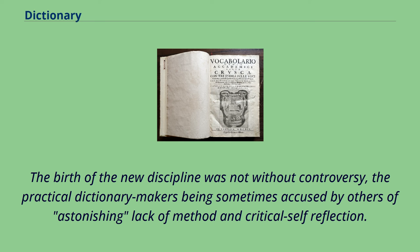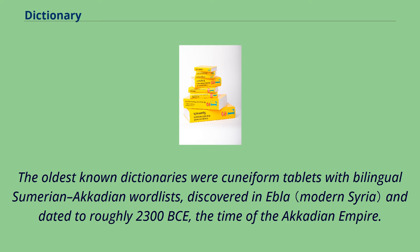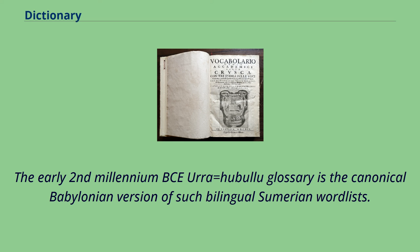The birth of the new discipline was not without controversy, the practical dictionary-makers being sometimes accused by others of astonishing lack of method and critical self-reflection. The oldest known dictionaries were cuneiform tablets with bilingual Sumerian-Akkadian wordlists, discovered in Ebla and dated to roughly 2300 BCE, the time of the Akkadian Empire.